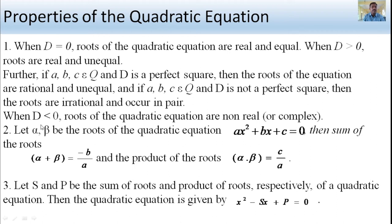The second property: let alpha and beta be the roots of the quadratic equation ax squared plus bx plus c equals 0. Then the sum of the roots is alpha plus beta equals minus b divided by a, and the product of the roots is alpha times beta equals c divided by a.